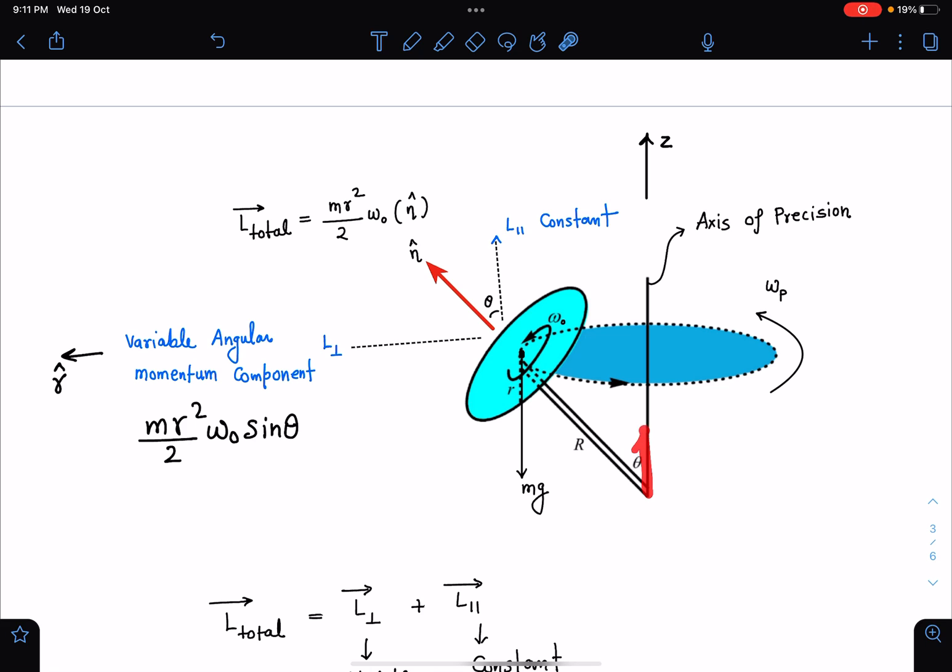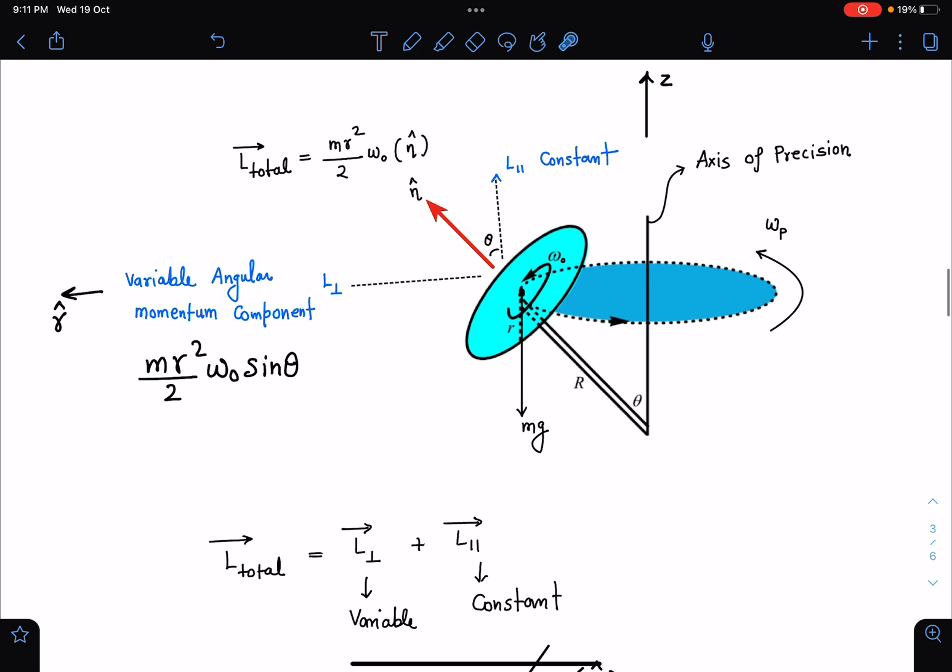If angular momentum is changing, that must be supported by torque of mg. Whatever rate of change of this angular momentum must equal the torque acting on this body. About this point, total angular momentum is m*r^2/2 * omega_naught * n cap. Let's break this into two components: L total equals L perpendicular (perpendicular to the precession axis) and omega about this axis is omega of precession. We need to calculate this angular velocity.